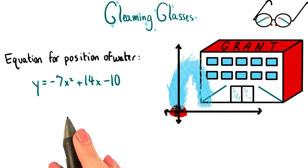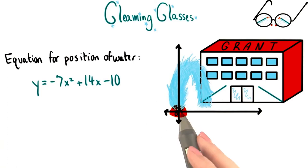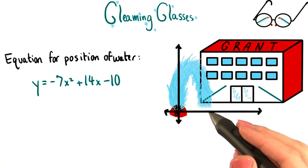Now, if Grant is right, then one of the roots of this equation should be where the fountain is located, at 0. And the other should tell us where the water lands over here.